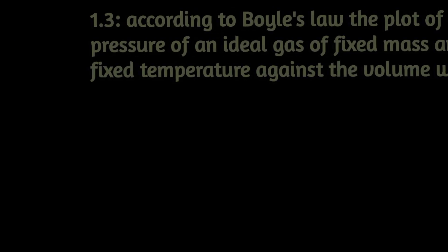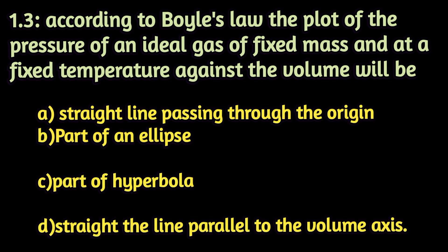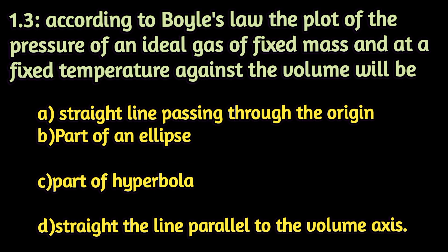Now we move to question 1.3. According to Boyle's law, the plot of pressure of an ideal gas of fixed mass at fixed temperature against its volume will be: option A straight line passing through the origin, option B part of an ellipse, option C part of a hyperbola, or option D a straight line parallel to the volume axis. The right answer is option C. This is our first MCQ section giving three marks.